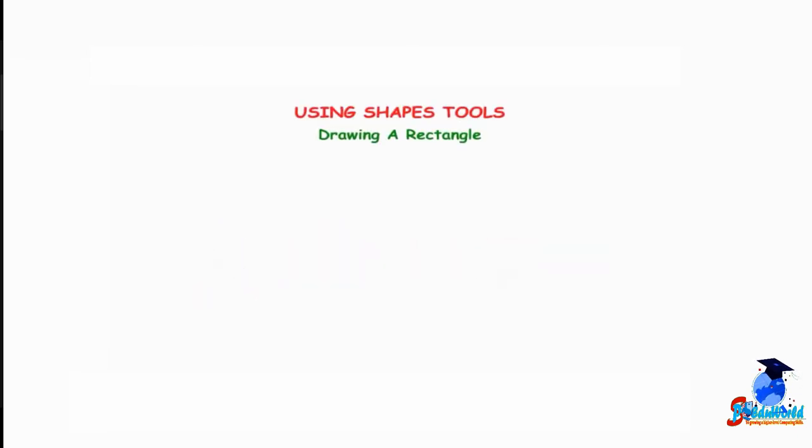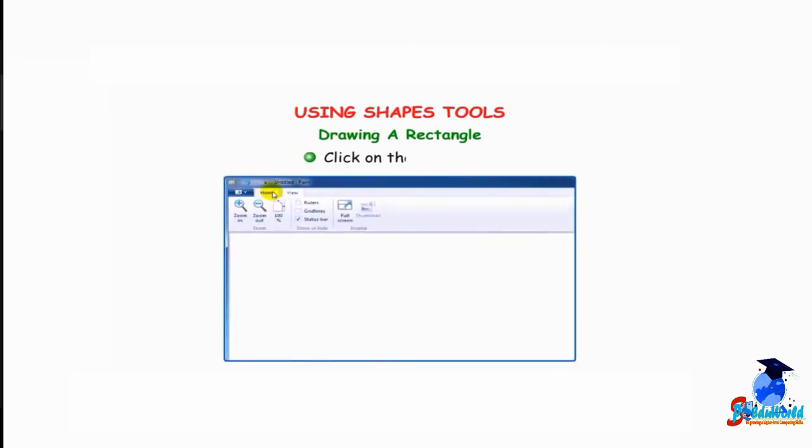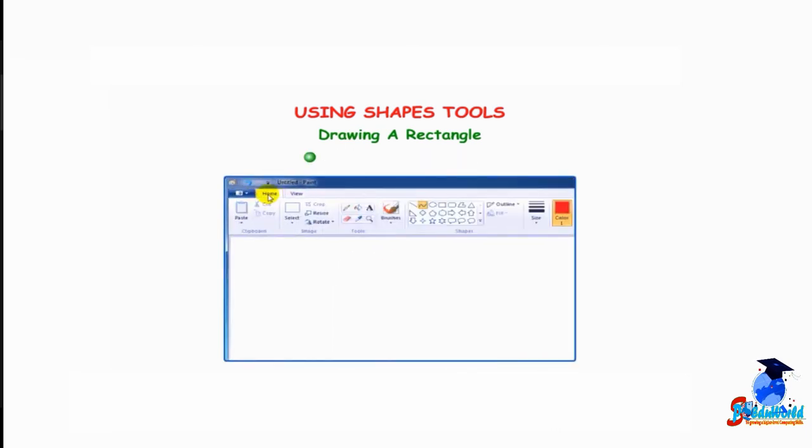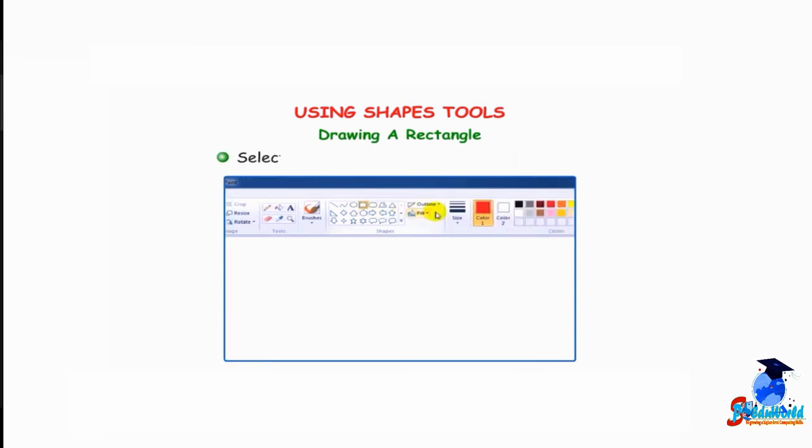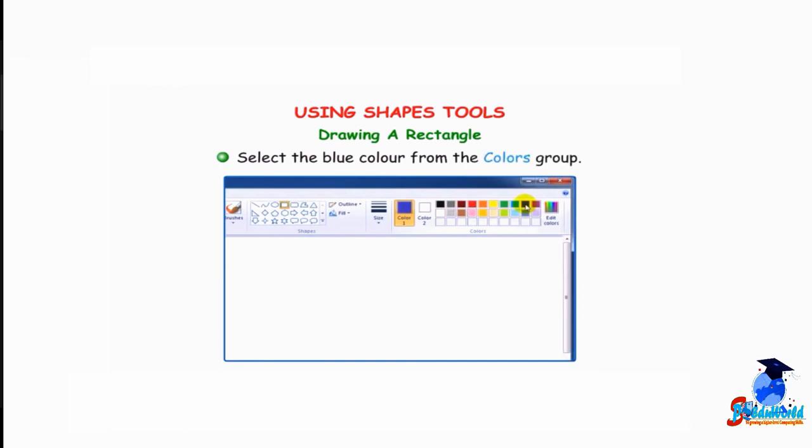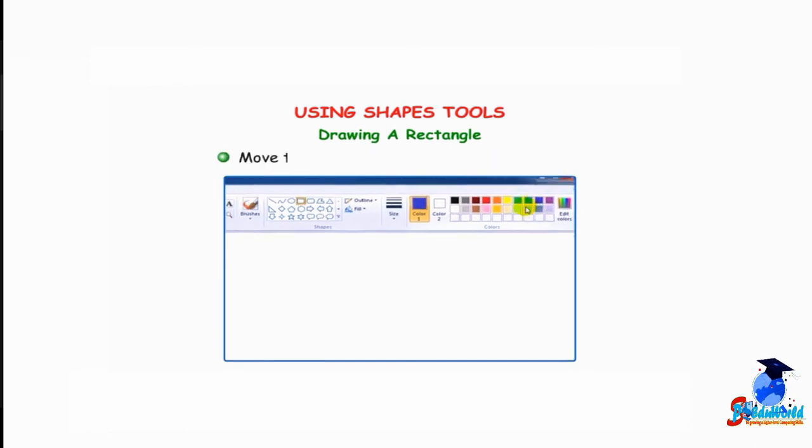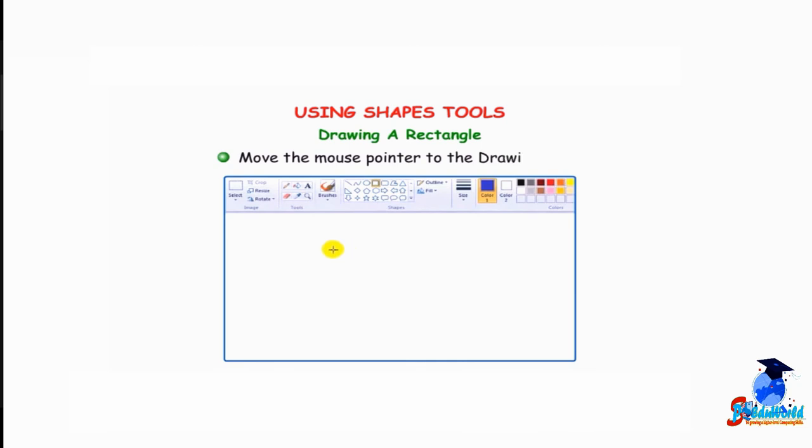Drawing a rectangle: Click on the Home tab. Click on the rectangle tool in the Shapes group. Select the blue color from the Colors group. Move the mouse pointer to the drawing area.